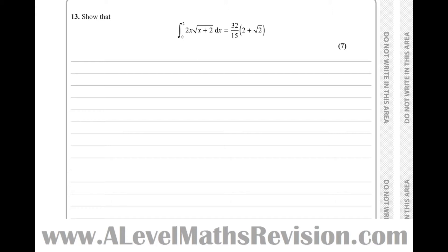Let's start with Method 1: integration by parts. I'll do both methods here. Using the by parts formula from the formula booklet, we're going to let u equal 2x, which means du/dx equals 2. And we're going to let dv/dx equal root of (x plus 2), or (x plus 2) to the half.